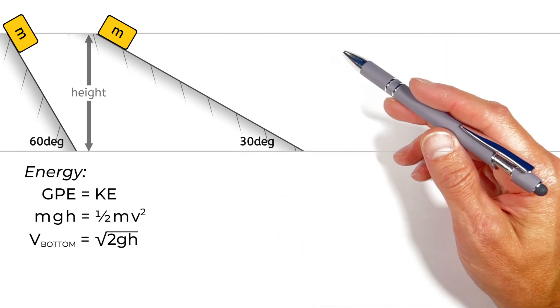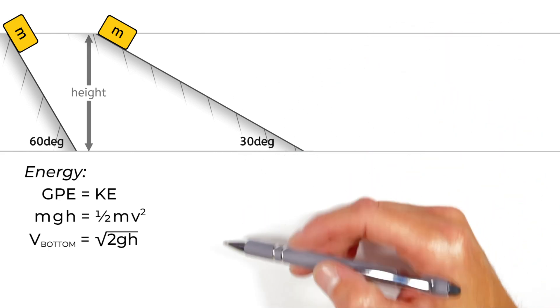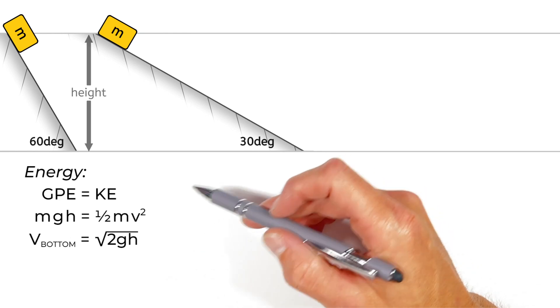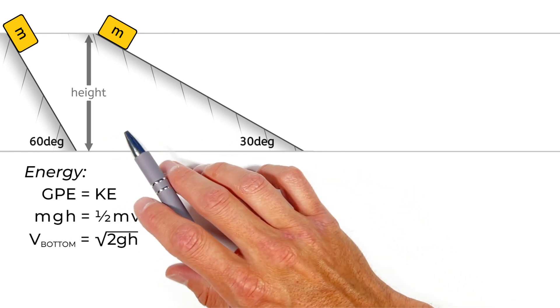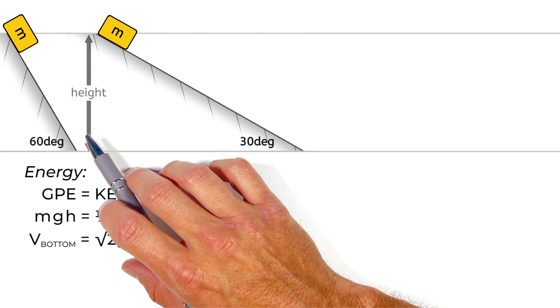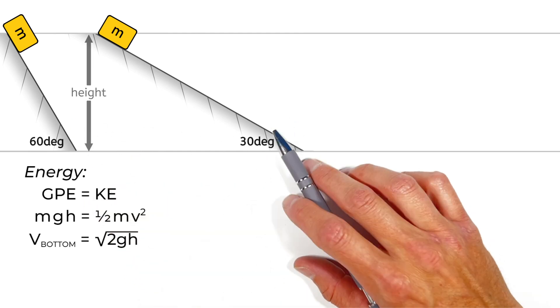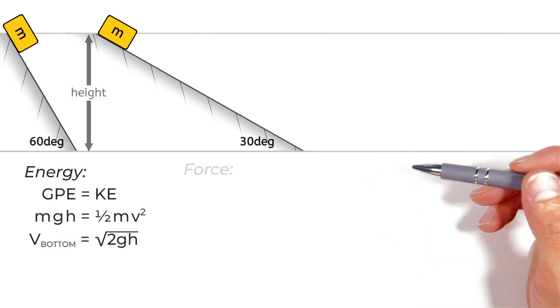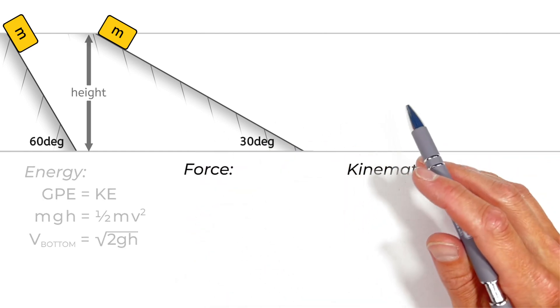Now, like I said, this example usually comes up when talking about energy, but I feel like the solution leaves something to be desired in really explaining why this block is going to be traveling at the same velocity whether we're dealing with a steep hill or a shallow hill. So I want to back up to the topics of force and kinematics to explain what's really going on here.